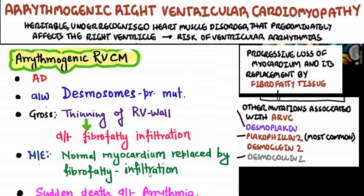Normal myocardium is replaced by fibro-fatty infiltration. Because this gives rise to cardiac arrhythmias like ventricular tachycardia and ventricular fibrillation, if unrecognized and untreated, the person can have sudden cardiac death. The specific proteins mutated include desmoplakin, plakophilin, desmoglein, and desmocollin. These are different protein receptors, with plakophilin and desmosomes being the most common. Because of mutations in those receptors, there is progressive loss of myocardium replaced by fibro-fatty tissue.